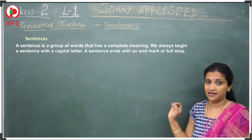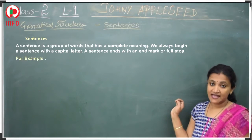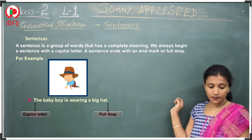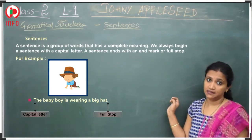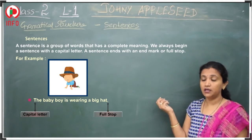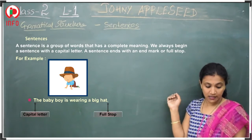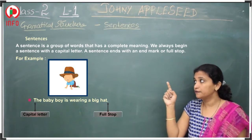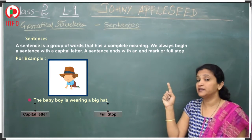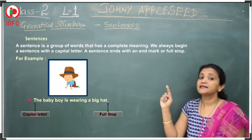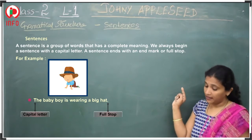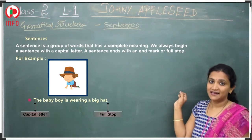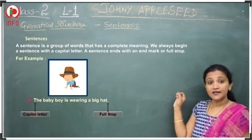This is called a sentence. Let's see some examples. 'The baby boy is wearing a big hat.' What is the baby boy doing? He is wearing a big hat. You can see in this sentence the first letter 'T' in 'The' is capital, and at the end after 'hat' there is a full stop. That makes it a sentence.